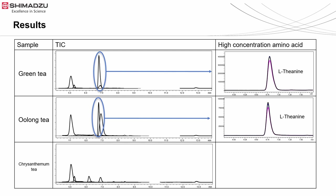Therefore, L-theanine is not detected in chrysanthemum tea. Instead, proline is detected in high concentration.